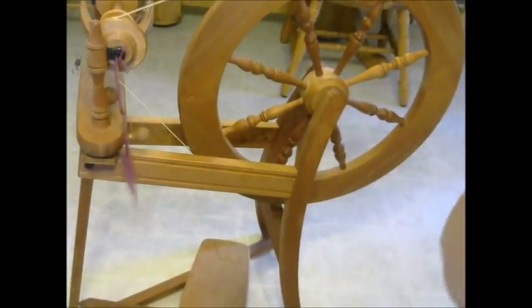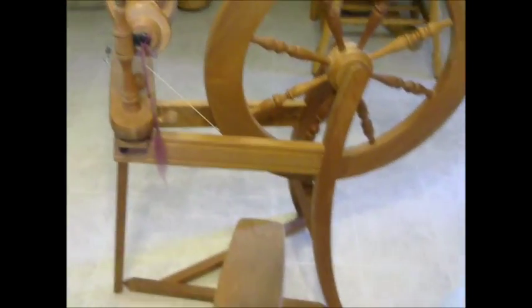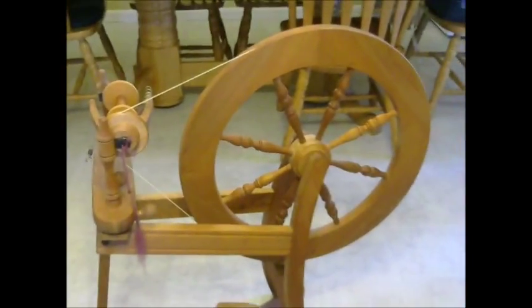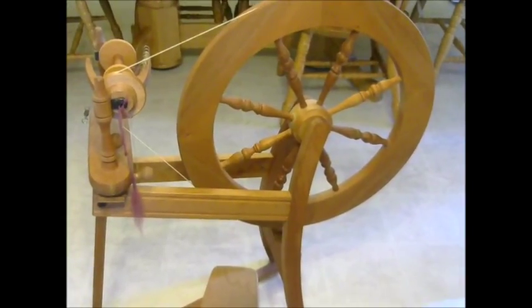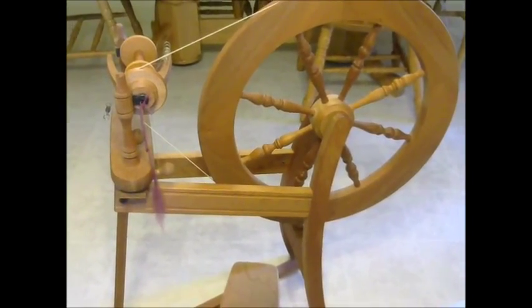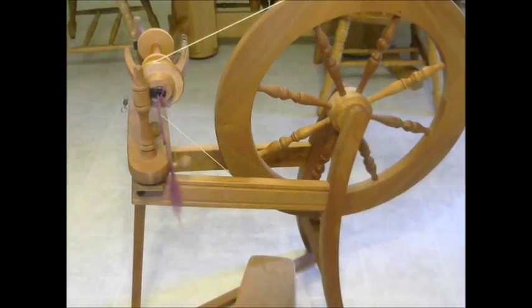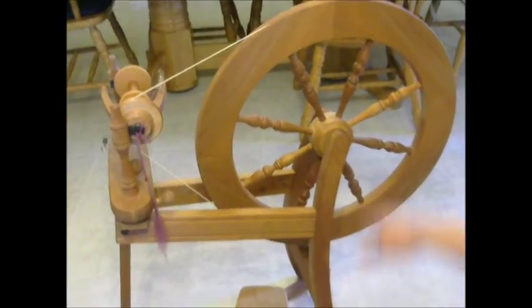I'm filming in my kitchen because the lighting seemed to be the best. Here is my wheel. I have an Ashford traditional wheel. This is also known as a Saxon wheel or a flax wheel. It is the smaller wheel.